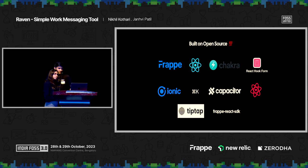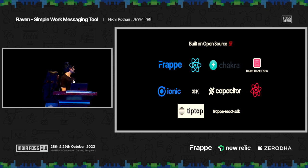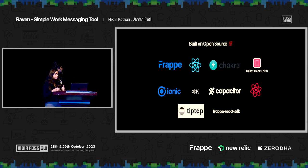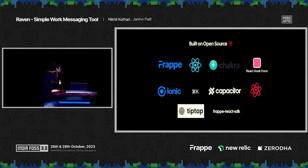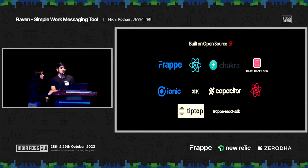Raven is built completely on open source. For our backend, we are using Frappe. For our frontend, we are using React. For the mobile app, we are using Ionic and Capacitor. We recently migrated our editor from Quill to TipTap, and that's been awesome.